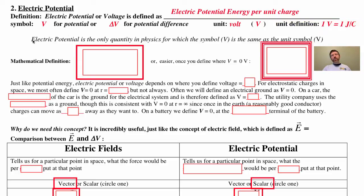Electric potential is the only quantity in physics, which I know of at least, for which the symbol, V for electric potential, is the same as the unit symbol, V for volt.